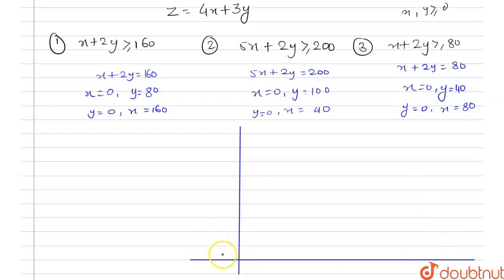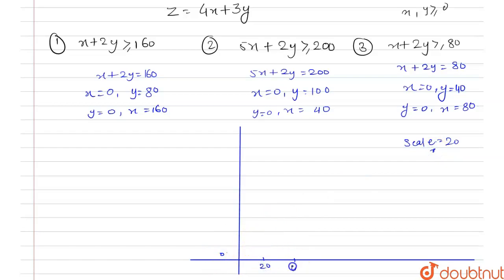At this point it will be the origin, that is (0, 0). We take a scale of 20 units. On the x-axis we have 0, 20, 40, 60, 80, 100, 120, 140, 160, and 180.